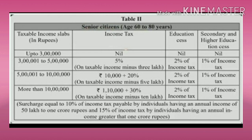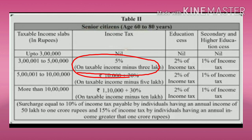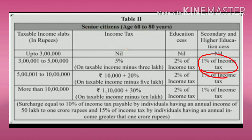For the senior citizen age group (60 to 80 years), three lakhs is the exemption — if they are earning up to three lakhs there is no need to pay any tax. If their annual income is more than three lakhs to five lakhs, they have to pay five percent on taxable income minus three lakhs, along with two percent education cess and one percent secondary and higher education cess.